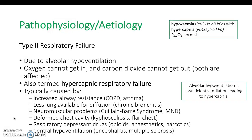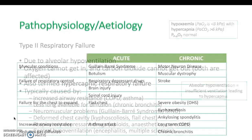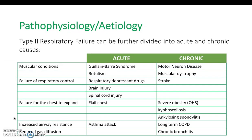Type 2 respiratory failure can also be caused centrally by drugs such as opioids or anaesthetics. This overview of causes — broken down into acute and chronic — shows that respiratory failure is not a disease in itself; it's caused by many different types of disease, such as stroke, flail chest, or an asthma attack. It is really common in long-term severe conditions but can also present acutely.